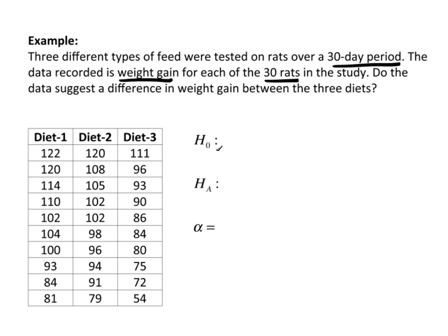So the null hypothesis here, just like a two-sample t-test, would be mu1 equals mu2, but now I have three means, so I'm going to say equals mu3. Under the null hypothesis, these are all the same. The research hypothesis is that we're looking for a difference between them.